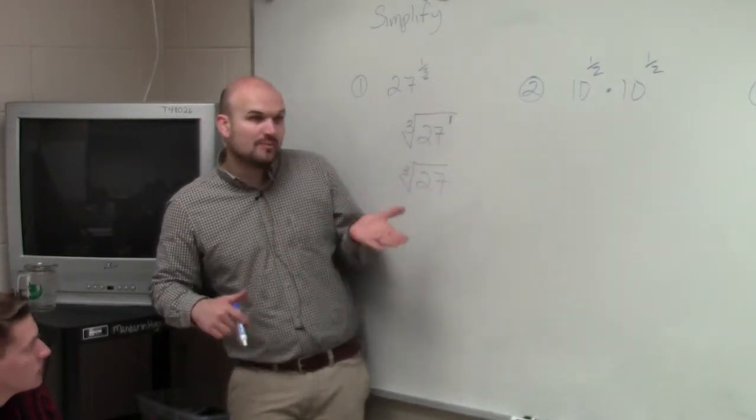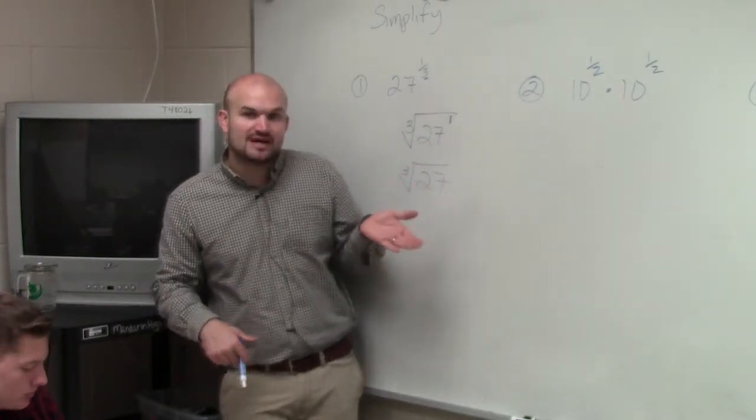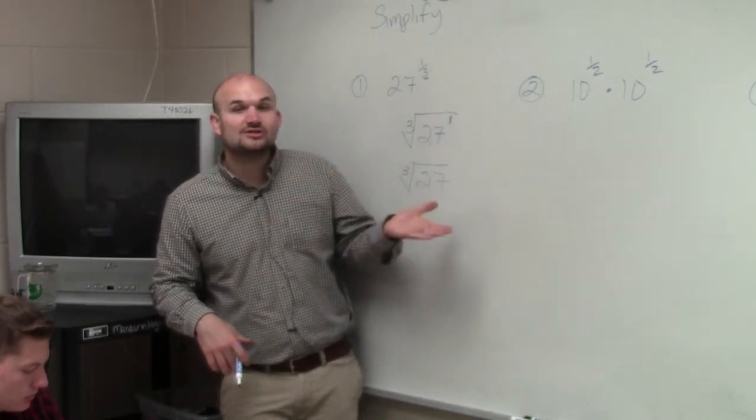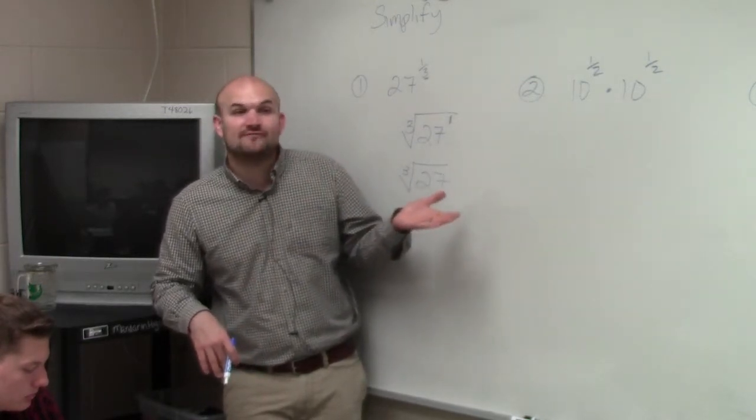Now, if you don't know what the number is multiplied by itself three times, it gives you 27, we can also simplify this by using prime factorization.